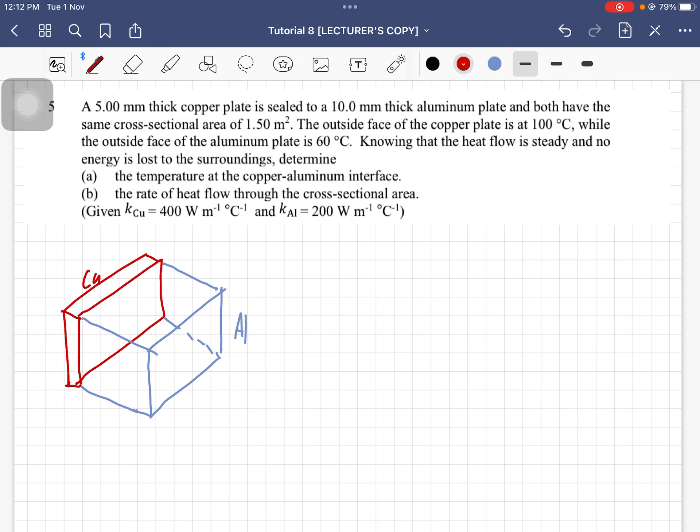The temperature outside of copper is 100 degrees Celsius. Temperature outside of aluminum is given as 60 degrees Celsius, and we are asked to determine the temperature at this interface here.